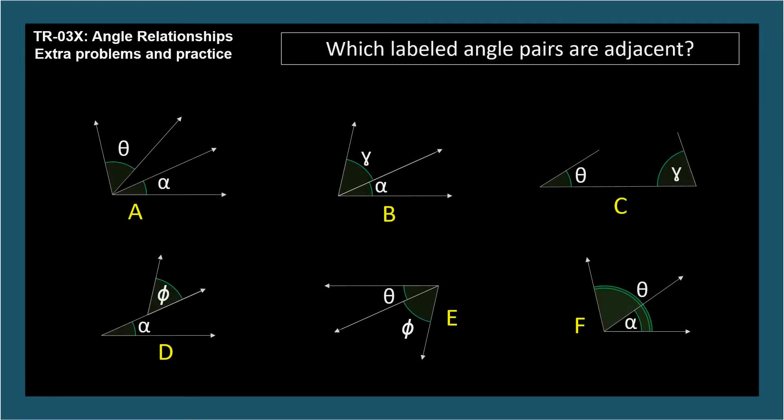Which labeled pairs are adjacent? Pause and I'll reveal the answer. B and E. If you said F, that's understandable, but there's a subtlety that adjacent angles can't be overlapping. And in diagram F, angle alpha is completely inside angle theta.